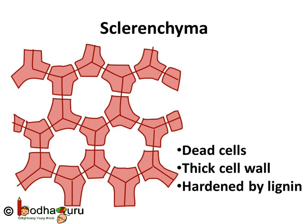The third type of simple permanent tissue is sclerenchyma. It is the tissue which makes the plant hard and stiff. You must have seen the husk of a coconut — it is made of sclerenchymatous tissue only. They are long and narrow as the walls are thickened due to lignin. This chemical lignin acts like cement and hardens the cells. Sclerenchyma tissues are present in the stems around the vascular bundles, in the veins of leaves and in the hard covering of seeds and nuts, providing strength to the various parts of the plant.